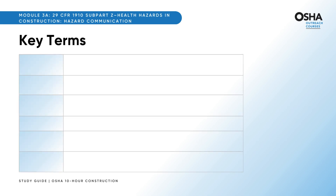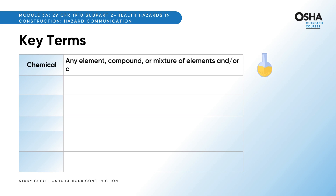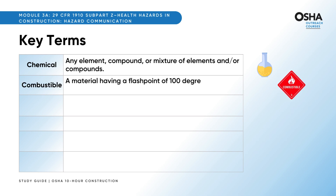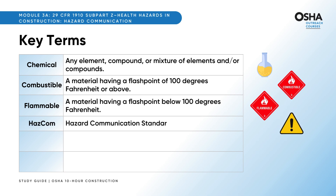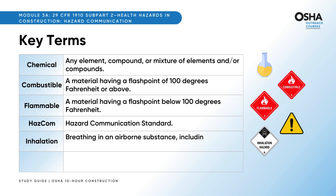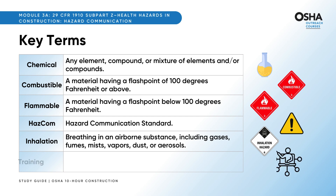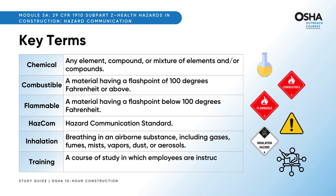Let's memorize the essential key terms. Chemical: any element, compound, or mixture of elements and/or compounds. Combustible: a material having a flashpoint of 100 degrees Fahrenheit or above. Flammable: a material having a flashpoint below 100 degrees Fahrenheit. Hazcom: Hazard Communication Standard. Inhalation: breathing in an airborne substance, including gases, fumes, mists, vapors, dust, or aerosols. Training: a course of study in which employees are instructed to identify and work safely with hazardous materials.